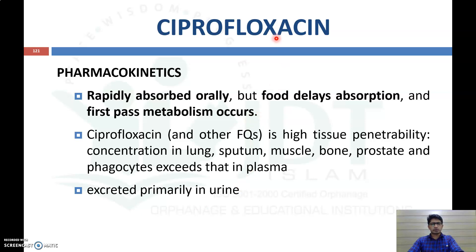Regarding the pharmacokinetics of ciprofloxacin, it is absorbed very rapidly through the oral route, though food may delay absorption and there is a chance of first-pass metabolism. Ciprofloxacin and other fluoroquinolones have high tissue penetrability; concentrations in lungs, sputum, muscle, bone, prostate, and phagocytes exceed those in plasma. They are primarily excreted in urine.